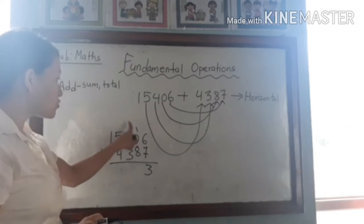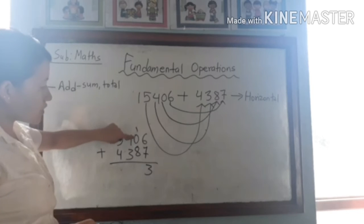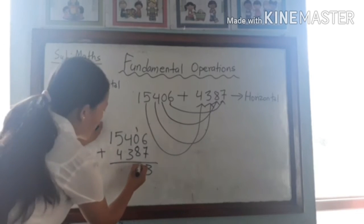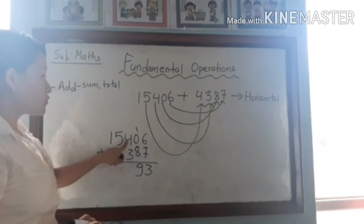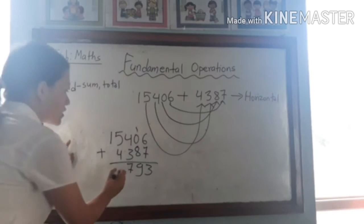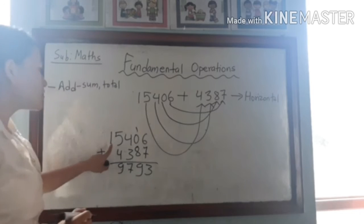We have to add there. 8 plus 1, 9. 3 plus 4, 7. 5 plus 4, 9. And one doesn't have pairs.